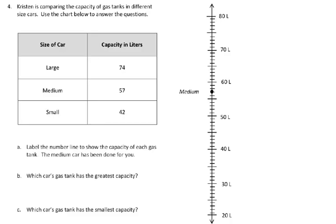We're going to go ahead to the next question, which is question 4, and it says, Kristen is comparing the capacity of gas tanks in different size cars. Use the chart below to answer the questions. So as you can see, we have the size of car, the large car holds 74 liters of gas, the medium car holds 57, and the small holds 42 liters.